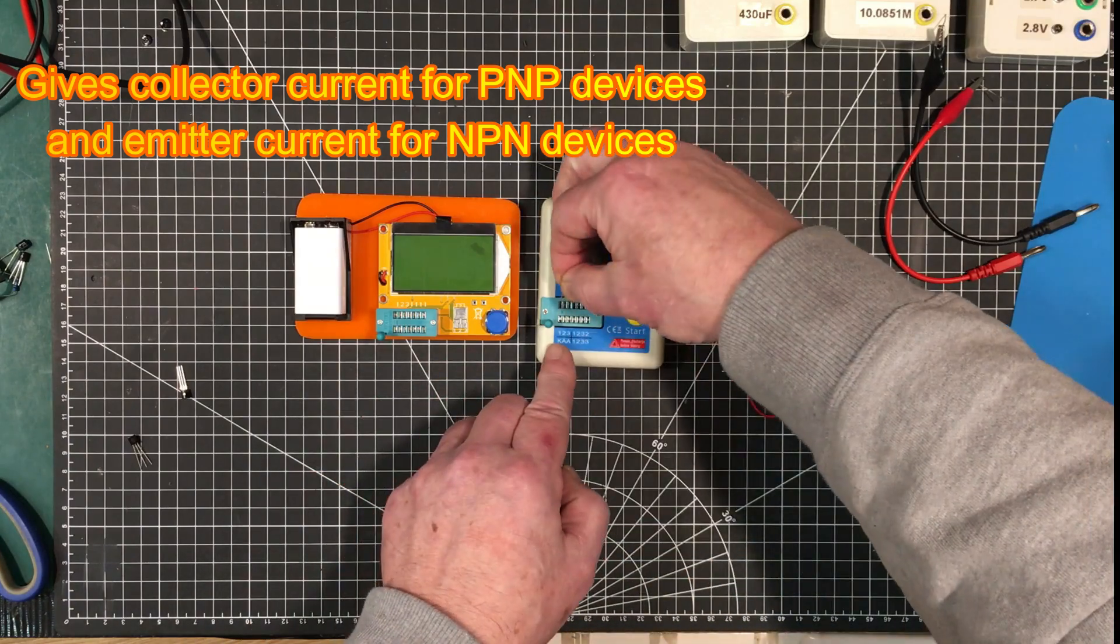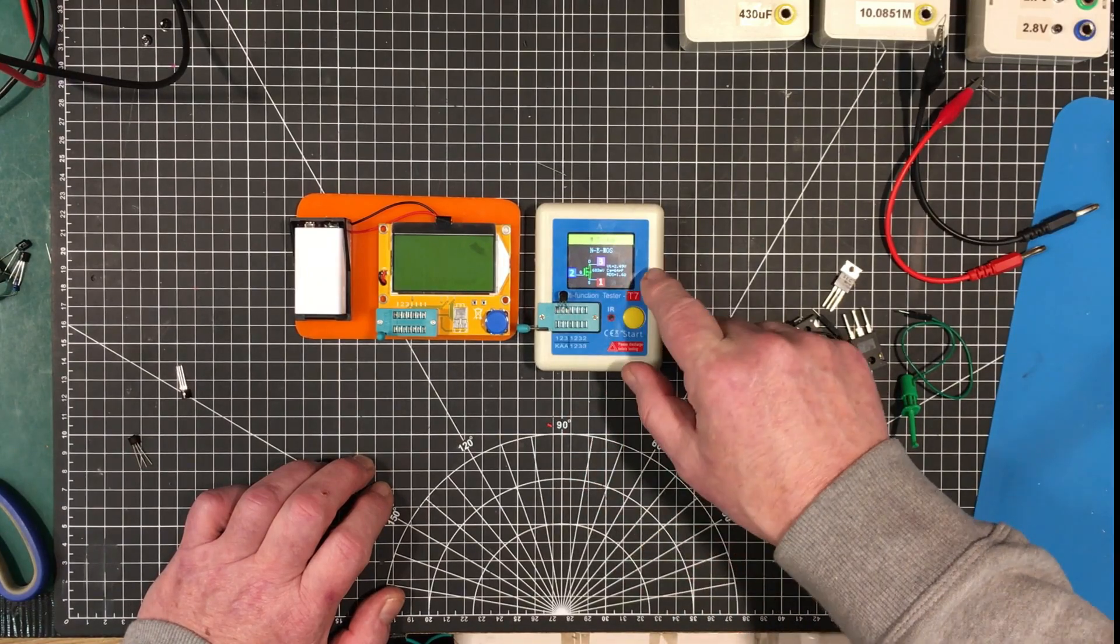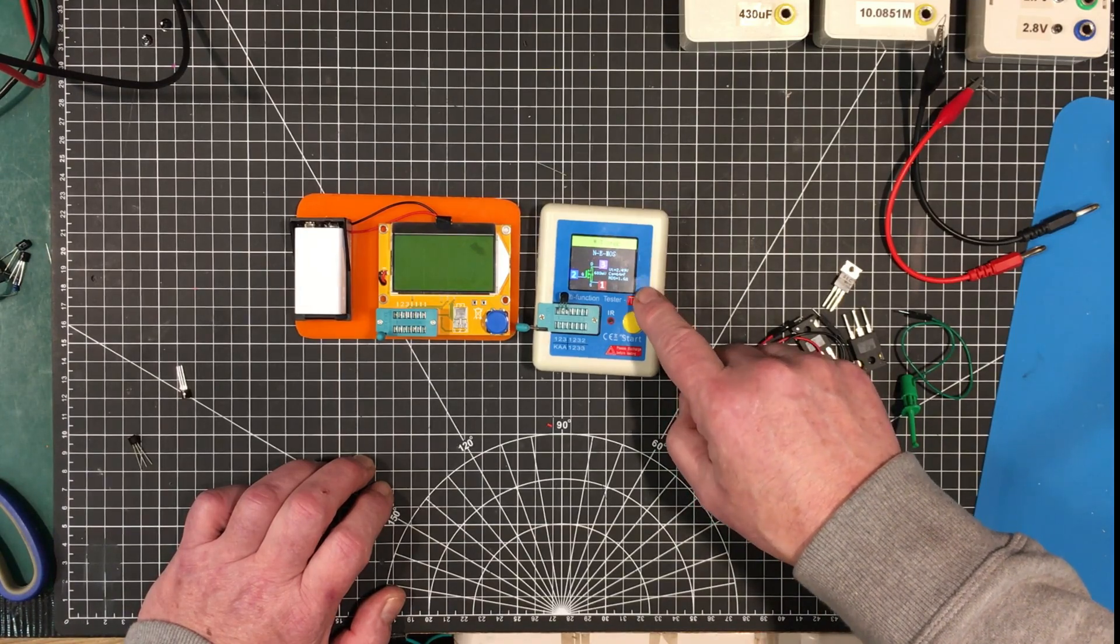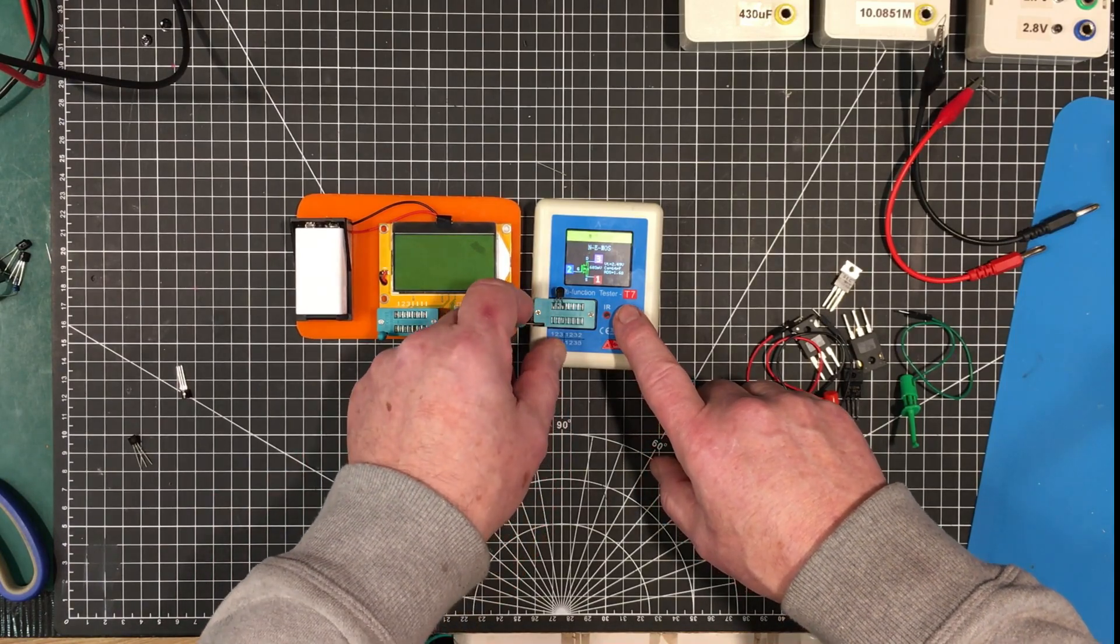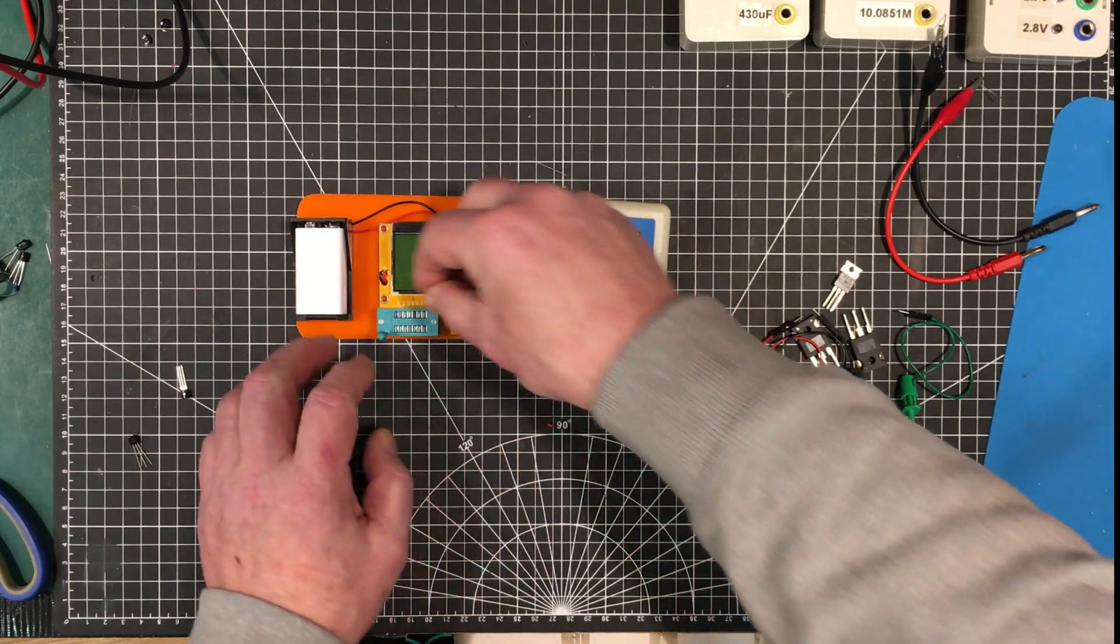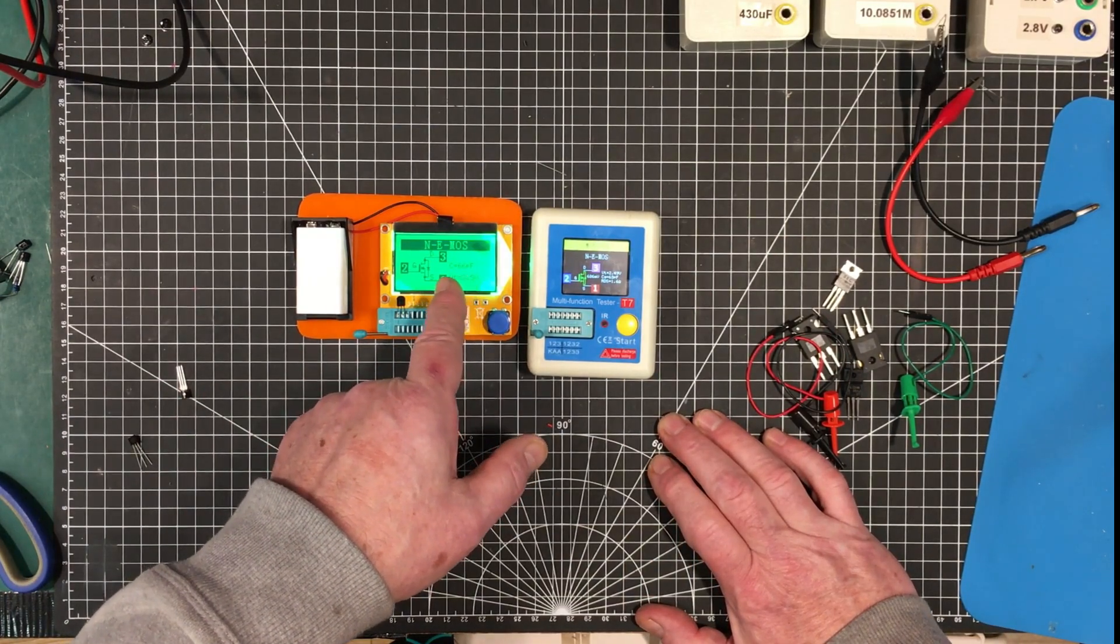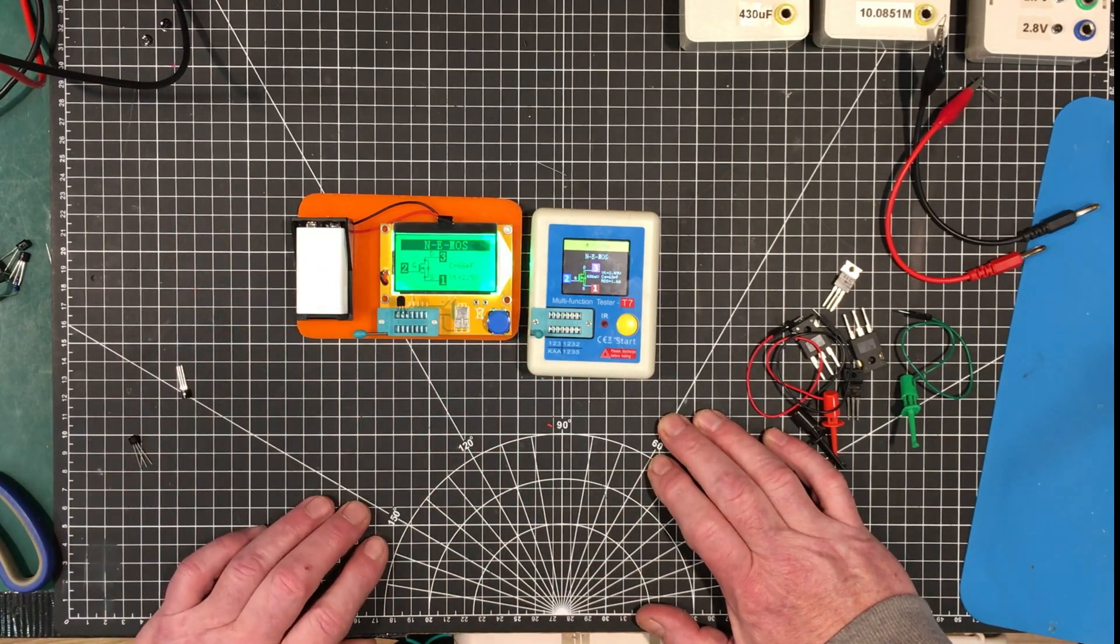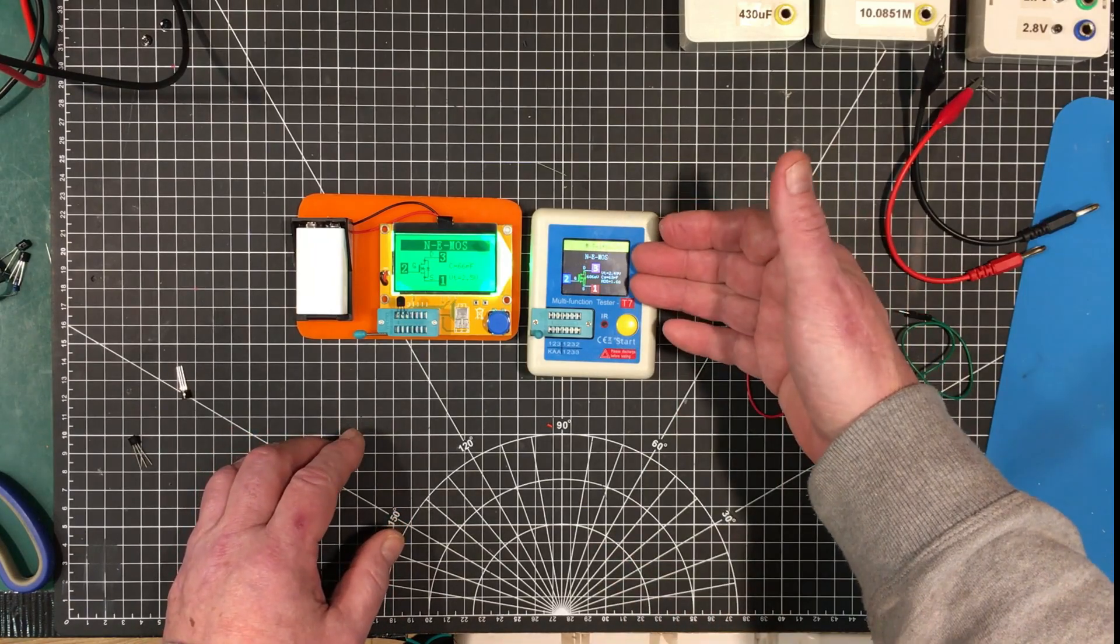So here, this one. Okay. So this is the 2N7000. Threshold voltage of 2.49, 64 picofarads, RDS of 1.6 ohms. That's pretty close to the specifications, because I looked them up recently. I'm going to test it again, so that it displays its information there a little bit longer so we can compare it over here. 66 picofarads versus 63, and the threshold voltage of 2.5 versus 2.49. Yeah. On the semiconductors, they seem to agree very well. This one gives a lot more information.